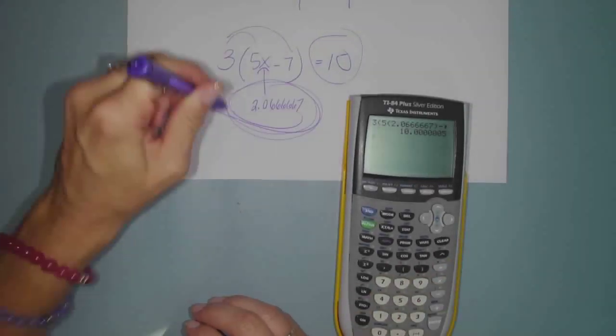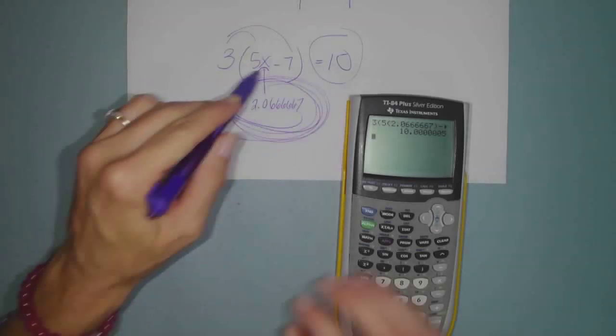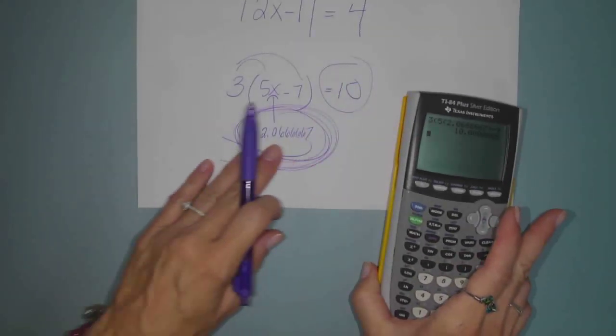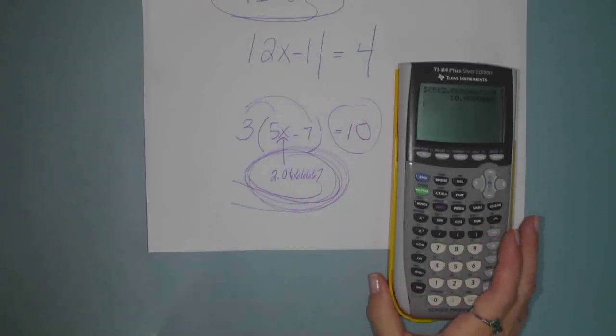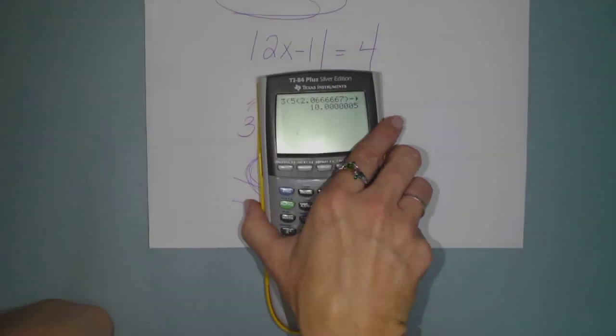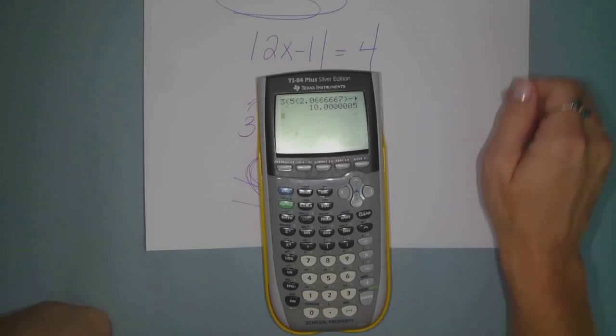If I had this as a fraction, I would get it exactly correct. But I'm just using the decimal approximation from the calculator. Okay. So this is how to use the TI-84 to graphically solve equations, which is pretty cool.